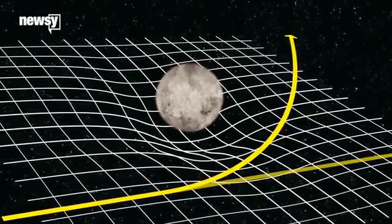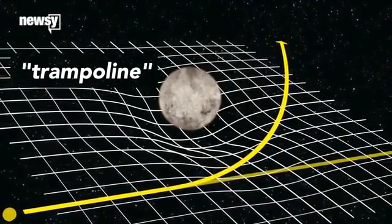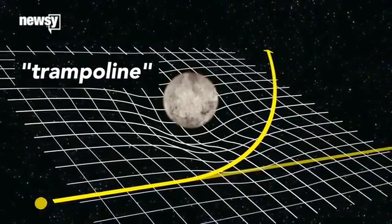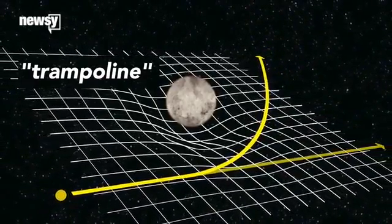And that's what the bent grid or so-called trampoline is meant to illustrate, helping us get our heads around how space curves in the presence of matter. The trampoline seems to be very successful in helping people to get this idea.